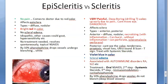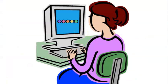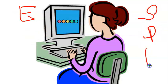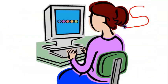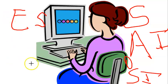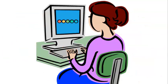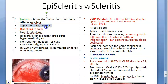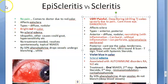In summary: episcleritis — no pain, bright red, self-resolving, treated with topical NSAIDs if needed. Scleritis — painful, violet-blue, scleral edema, associated with autoimmune conditions, treated with oral NSAIDs, systemic steroids, and immunomodulators. In episcleritis, phenylephrine causes blanching; in scleritis it does not. That covers the main differences between episcleritis and scleritis.